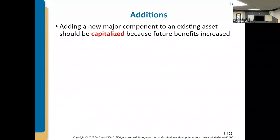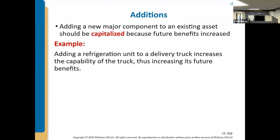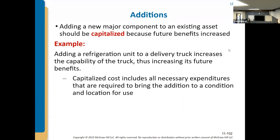Having a new component for an existing asset could be capitalized because it potentially increases future benefits. For example, adding refrigeration to a delivery truck would be an addition — it allows the truck to be used for more things, adding future benefits. Or if you rip out old refrigeration that has less than a year of expected life left and install a new unit that does exactly the same thing but is newer and has a longer life, that would also be capitalized.